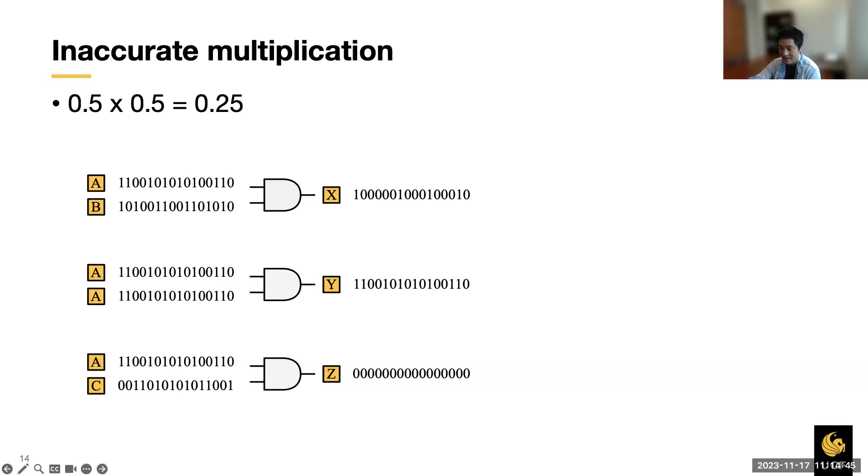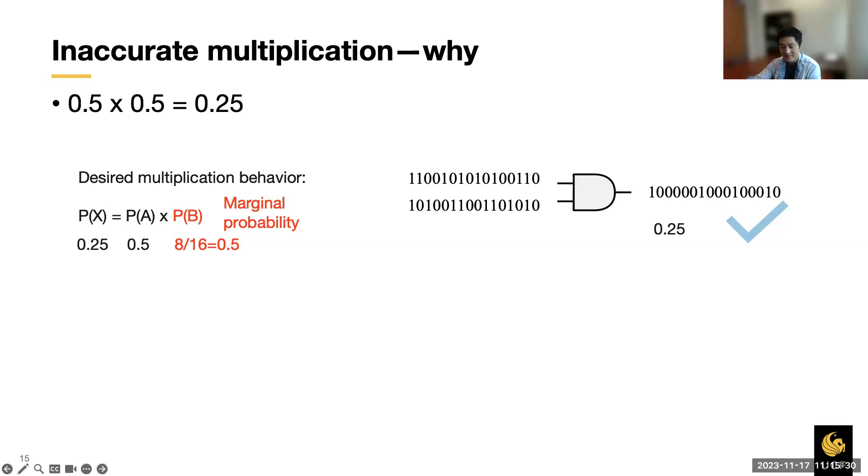Now I will show you how those different correlation values impact the multiplication accuracy, which has been a headache for almost half a century. Here are three examples. Although all of them share one common input A, the second input differs from each other. As such, they show different correlation values. For example, the first one is zero, second positive one, and negative one for the last. Then the number of aligned ones determines the output value in those examples. Zero correlation gives the correct product, while non-zero correlation does not. In fact, zero correlation is both necessary and sufficient for precise unary computing or unary multiplication.